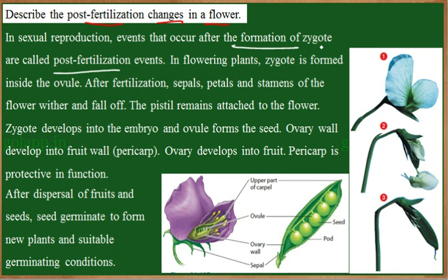The zygote is formed by the process of fertilization, and all the changes which occur in the zygote are called post-fertilization events. In flowering plants, the zygote is formed inside the ovule.